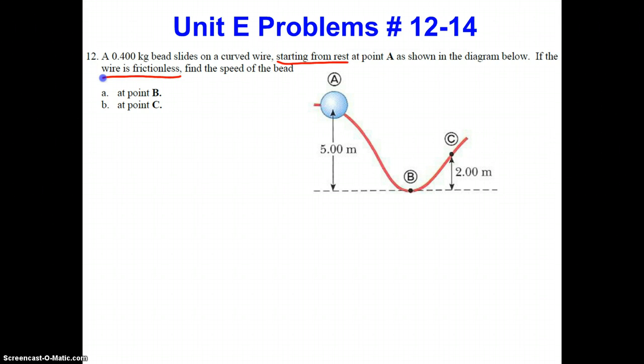The other key here is that the bead starts from rest, as you'll see here in a moment. I'm going to color code the answer to A in blue. We would start off anticipating a conservation of energy approach with the conservation of energy statement that the initial mechanical energy in the system is equal to the final mechanical energy in the system. Clearly, the two spots that we're comparing are the initial mechanical energy at point A and then the final mechanical energy at point B.